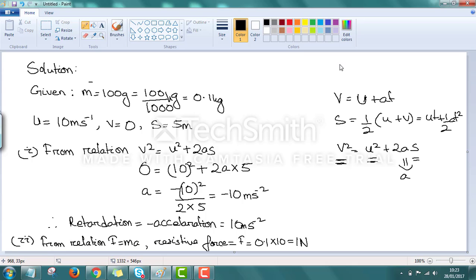From the solution, as you can see, mass is 100 grams and we have converted it into kg and that comes as 0.1 kg. Initial velocity is 10 meter per second. Final velocity is zero. S is 5 meters.